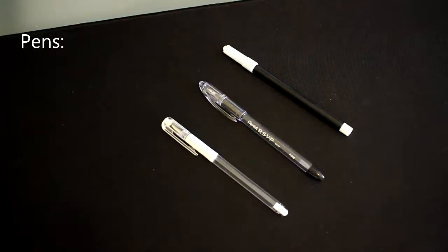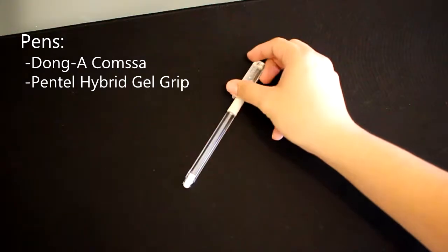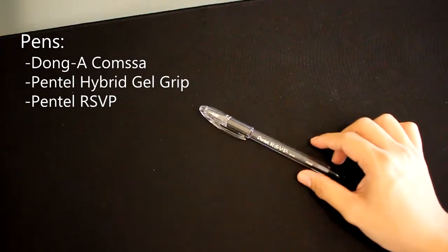Here's how to make an MSXA in one minute. Here are the pens you will need: one Compso, one hybrid gel grip, and one Pentel RSVP.